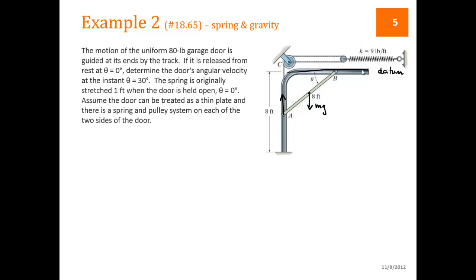Originally, when it's up at the top, the spring has a stretch of one foot. And we can assume that the door can be treated as a thin plate. A thin plate is rotating around an axis through its area. So if we look at our table, we know then that I is equal to 1/12 of mass times a squared, where a is the side length perpendicular to that axis. So in this case, 8 feet. This is 1/12 of 80 divided by 32.2 is our mass times 8 feet squared. So that's what our I is.